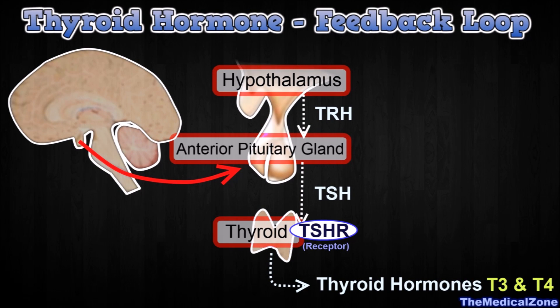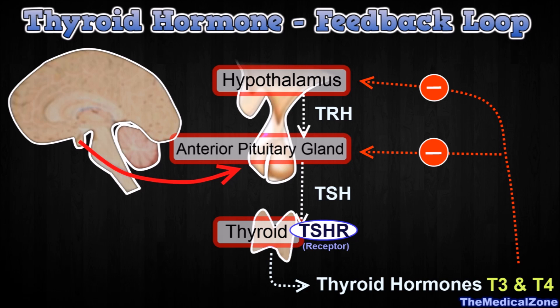This hormone production system is regulated by a negative feedback loop, so that when the levels of the thyroid hormones, T3 and T4, increase, they prevent the release of both Thyrotropin-Releasing Hormone and Thyroid-Stimulating Hormone. This system allows the body to maintain a constant level of thyroid hormones.